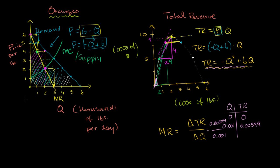This is interesting because this is a different price and quantity than we would get under perfect competition. If we were dealing with perfect competition, the equilibrium price and quantity would be where the supply and demand curves intersect — a price of $3 per pound and a quantity of 3,000 pounds.